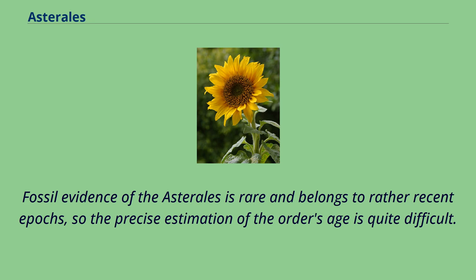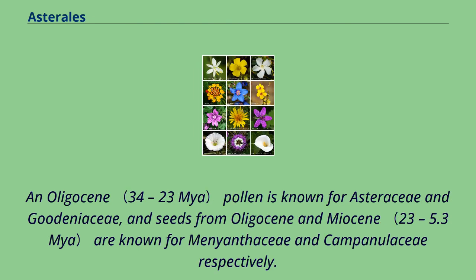Fossil evidence of the Asterales is rare and belongs to rather recent epochs, so precise estimation of the order's age is quite difficult. Oligocene pollen is known for Asteraceae and Goodeniaceae, and seeds from the Oligocene and Miocene are known for Menyanthaceae and Campanulaceae respectively.